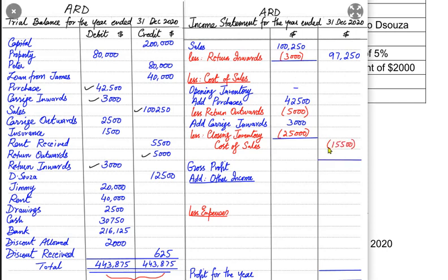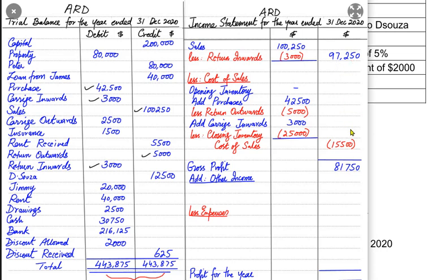In this question, cost of sales is written twice — once as a heading and once at the line level in front of the final value. This format must be followed. Deducting cost of sales from net sales gives us gross profit. The goods actually cost the business $15,500, and we sold those goods for 97,250, so Mr. ARD is enjoying a very high gross profit.